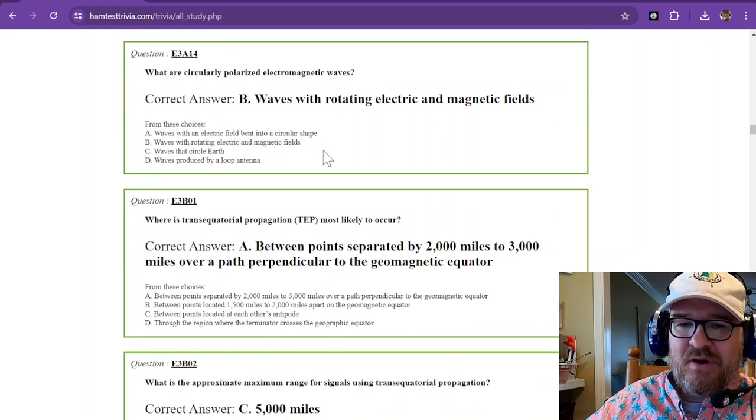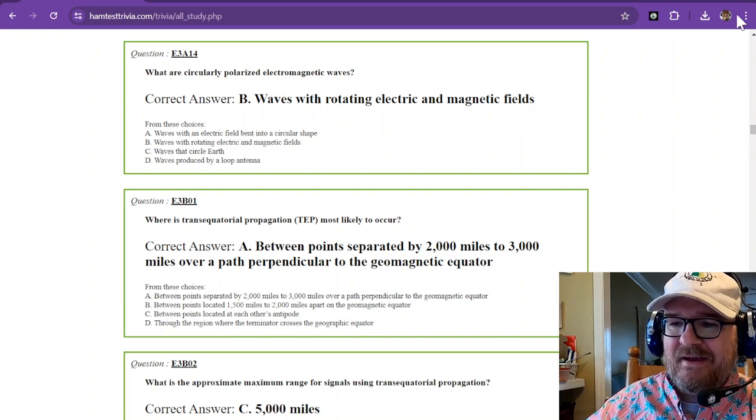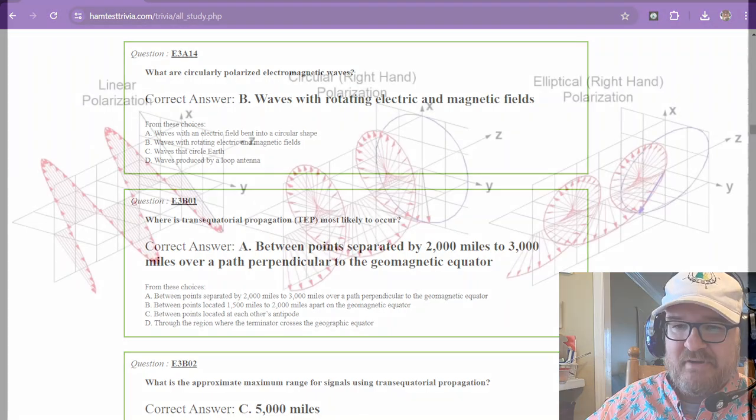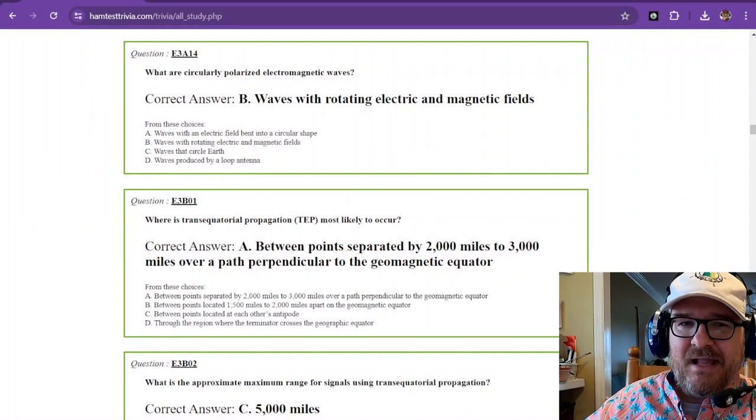And the last question of this section. What are circularly polarized electromagnetic waves? These are waves with rotating electric and magnetic fields. And I have one last image for us to look at here. You can see that there's a linear polarization. I suppose that's the normal one. Then you have circular polarization. And this one just happens to be the right-hand polarization. So you can see that those fields are spinning around. There's another one called elliptical. And I think that one does come up a little bit later in our studies.